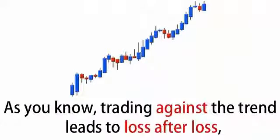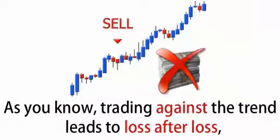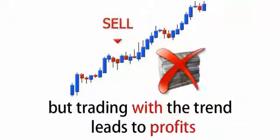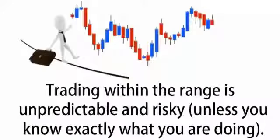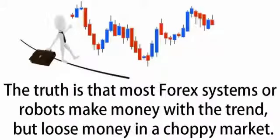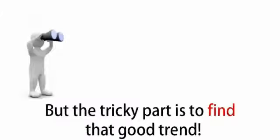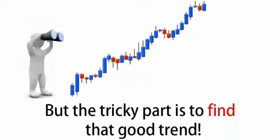As you know, trading against the trend leads to loss after loss, but trading with the trend leads to profits, or at least increases the profitability of any method or robot you trade. Trading within the range is unpredictable and risky, unless you know exactly what you're doing. The truth is that most Forex systems or robots make money with the trend but lose money in a choppy market. But the tricky part is to find that good trend.